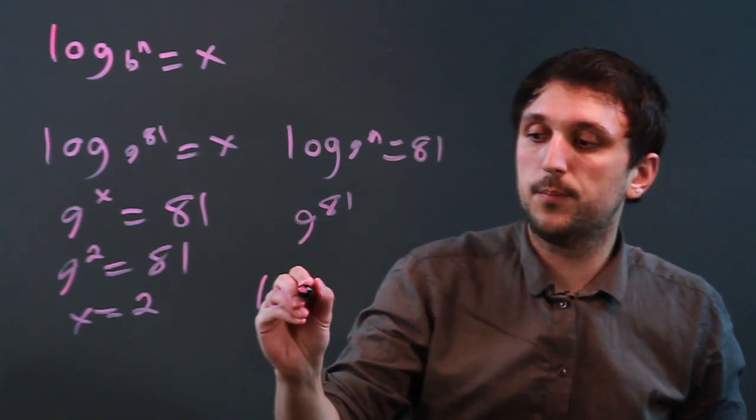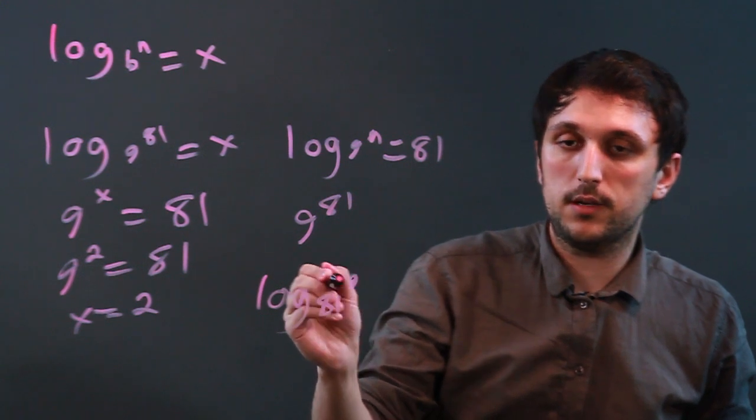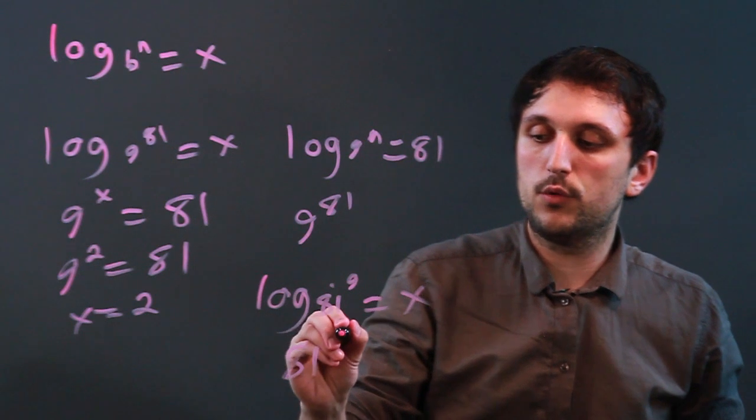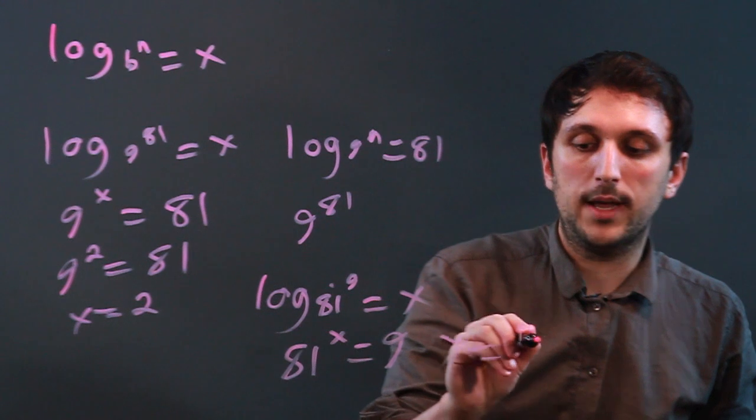If we said log base 81 of 9 equals x, then we're saying 81 to the x equals 9, and x would equal 1 half.